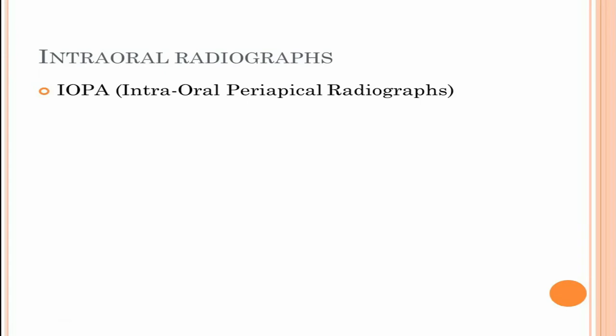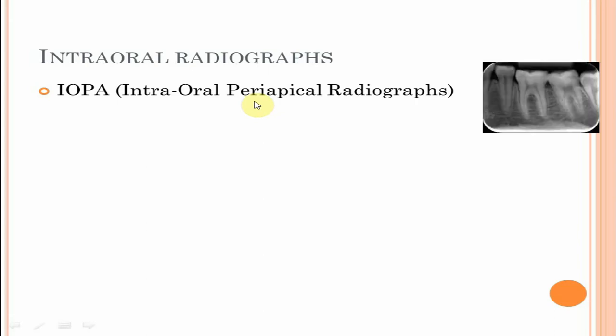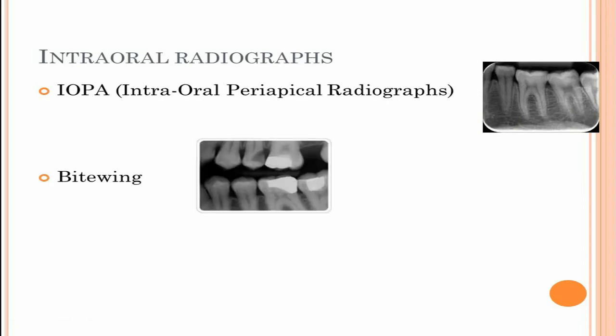There are three types of intraoral radiographs. First is IOPA or intraoral periapical radiograph, used to record the crowns, roots and surrounding bone of a limited number of teeth. Next is bite-wing or interproximal radiograph, used to record the coronal portions of maxillary and mandibular teeth in one image and useful for detecting interproximal caries and evaluating alveolar bone height.